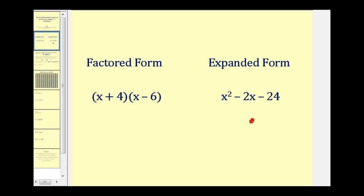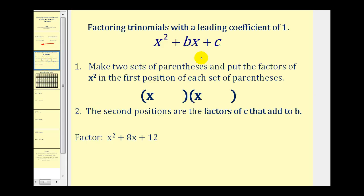So we'll be going from expanded form to factored form. Let's take a look at how we're going to do that. If we have a trinomial when the leading coefficient is 1, meaning it's in the form of x squared plus bx plus c, it's a pretty straightforward process. We're going to make two sets of parentheses and put the factors of x squared in the first position of each set of parentheses.